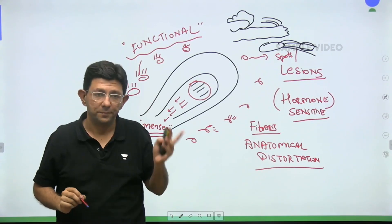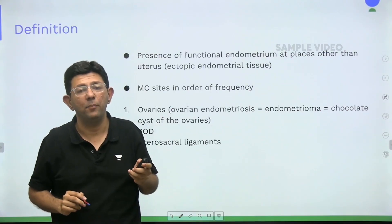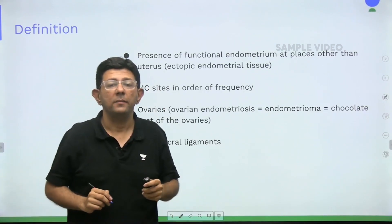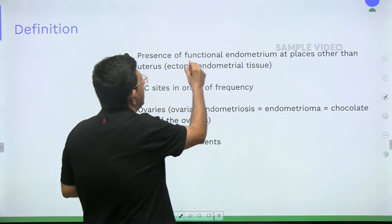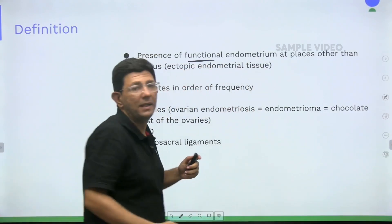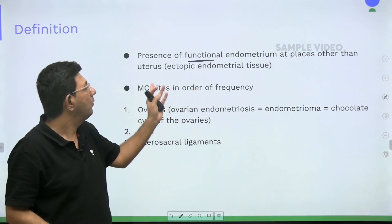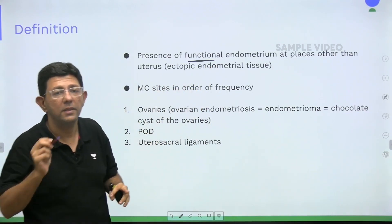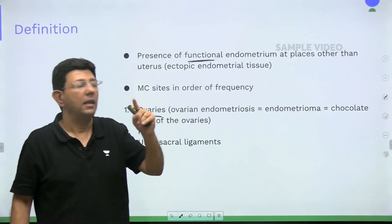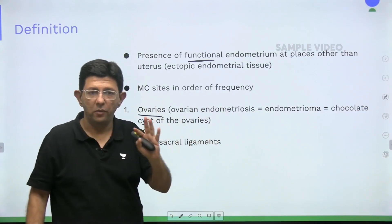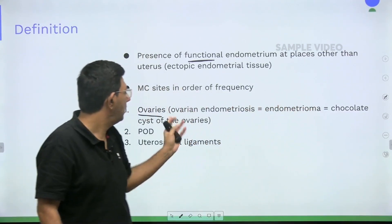In order of frequency, the sites are: number one — ovaries; number two — pouch of Douglas; number three — uterosacral ligaments. These are very important MCQ points. Please pay attention: the presence of functional endometrium at places other than the uterus is ectopic endometrial tissue, and the most common site is the ovaries, which develops into ovarian endometriosis.